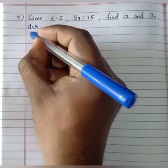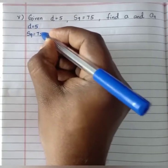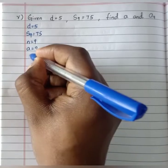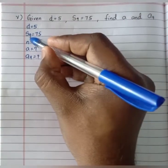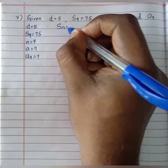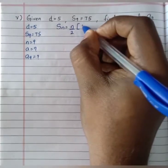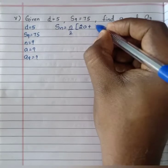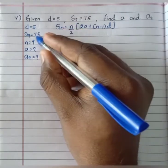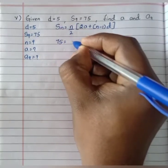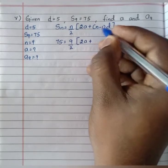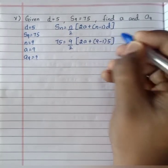Given d equals 5, S9 equals 75, n equals 9, find a and the 9th term. Using the Sn formula: Sn equals n divided by 2 times 2a plus n minus 1 into d. Substituting: 75 equals 9 divided by 2 times 2a plus 9 minus 1 into 5.